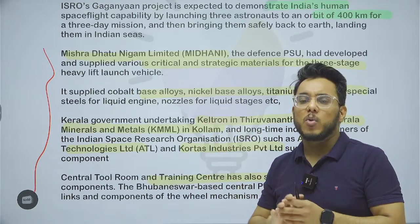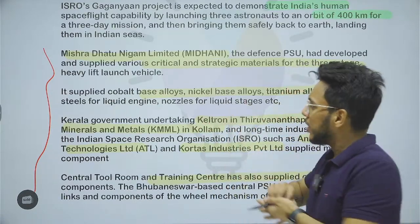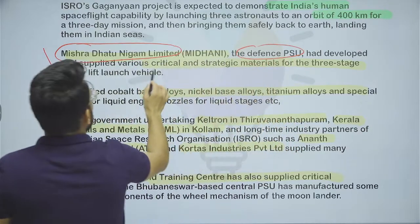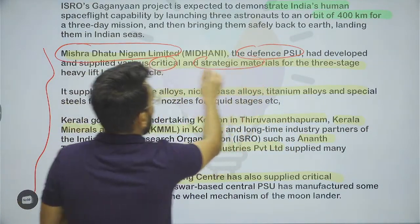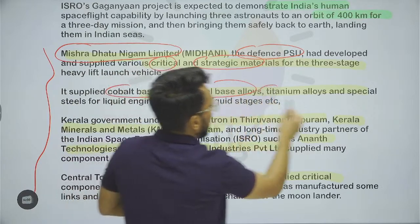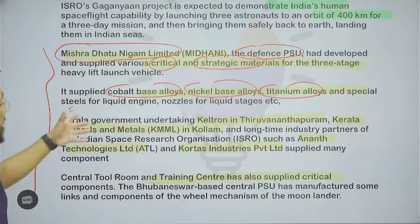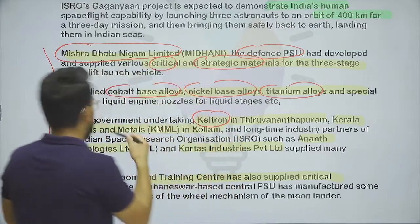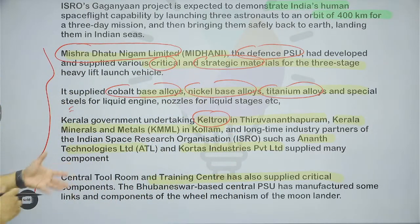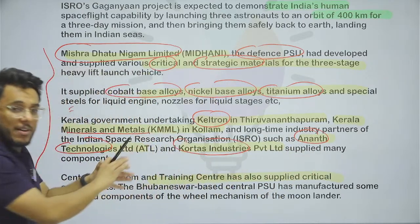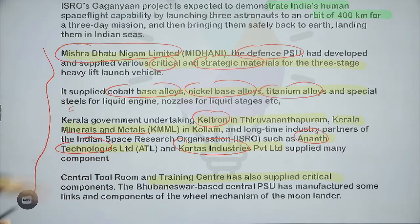Many important PSUs and even private organisations have contributed to the Chandrayaan 3 launch. Mishra Dhatu Nigam Limited — a defence PSU — developed critical strategic materials including cobalt-based alloys, nickel-based alloys, titanium alloys, and special steel for liquid engines. Kerala government's Keltron and Kerala Minerals and Metals also provided components. Private organisations such as Anant Technologies and Kaltas Industries supplied critical components. This shows ISRO collaborating increasingly with external partners in its space missions.